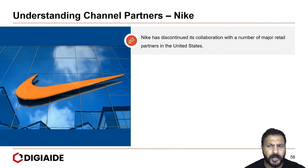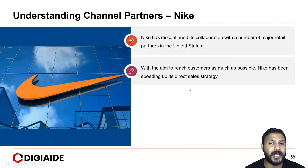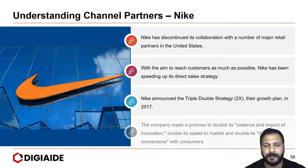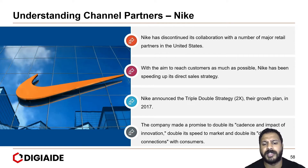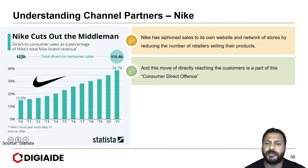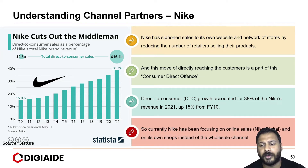Nike has discontinued its collaboration with a number of major retail partners in the United States. With the aim to reach customers as much as possible, Nike has been speeding up its direct sales strategy. Nike announced the triple-double strategy 2X, their growth plan in 2017. The company made a promise to double its cadence and impact of innovation, double its speed to market, and double its direct connections with consumers. Nike has stiffened sales to its own website and network of stores by reducing the number of retailers selling their products, as part of its consumer direct offense. In fact, direct-to-consumer growth accounted for 38% of Nike's total revenue in 2021, up from 15% in 2010. Nike has been focusing on online sales and its own shops instead of the wholesale channel.